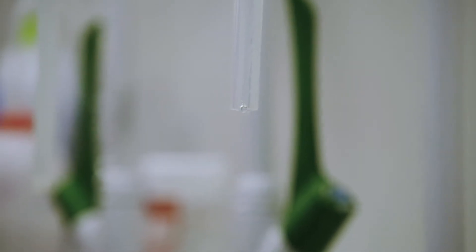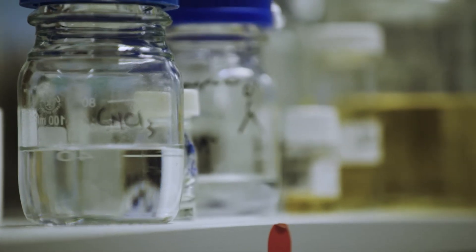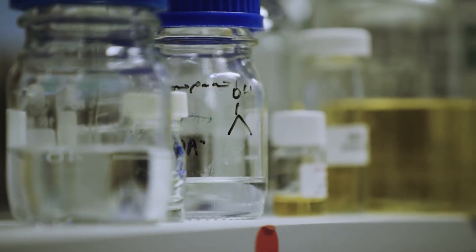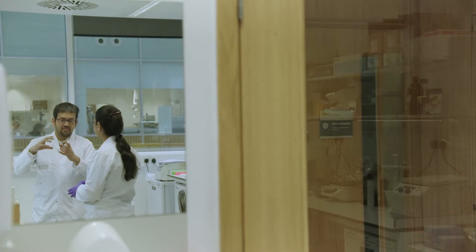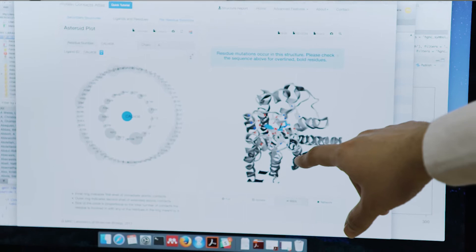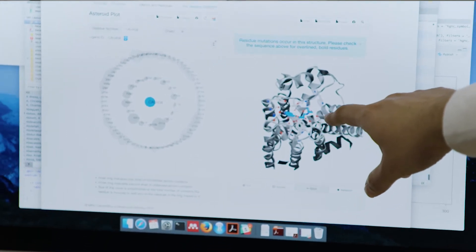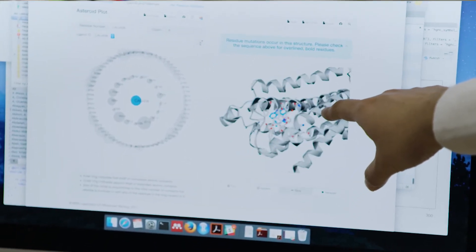The classical view has been that for a sequence of amino acids like a protein to achieve its function, it needs to adopt a defined shape. But our own research has been looking at sequences that don't adopt a defined shape but still function.